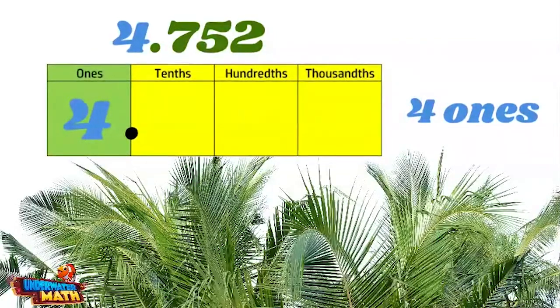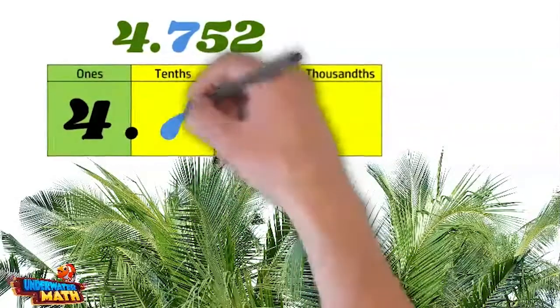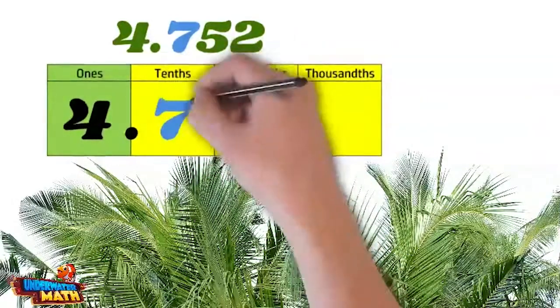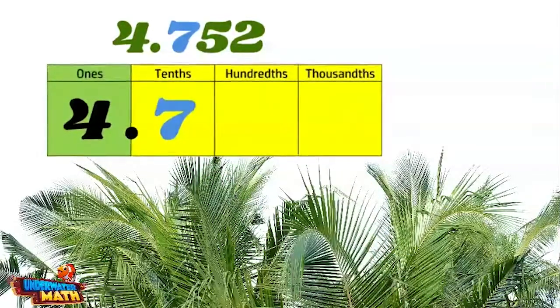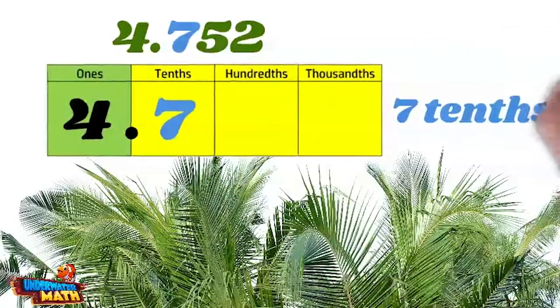Now moving on to the tenths place. The great thing about decimal place values is that the value is in the name. There is a seven in the tenths place, so it has a value of seven tenths.